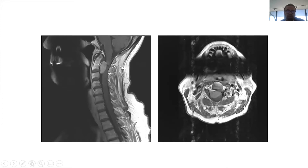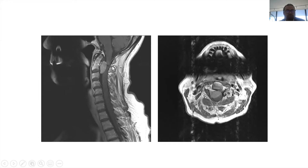This is a sagittal T1 image — the CSF here is hypointense. You can see there is a lesion just behind the second cervical vertebra. Anytime you see a lesion that may represent a tumor or infection, you want to place it in a compartment.